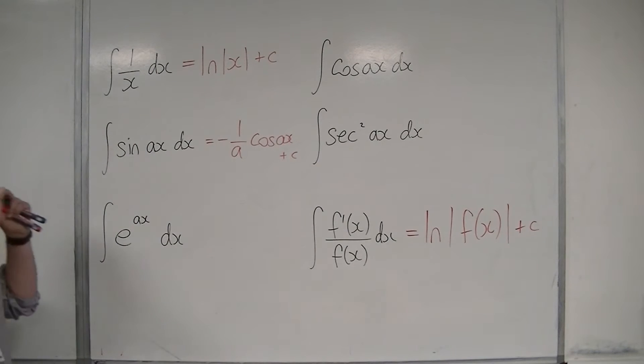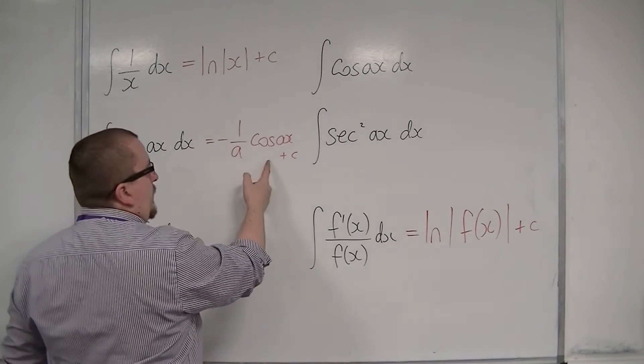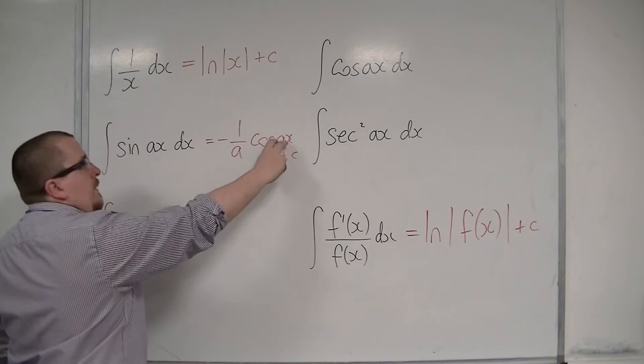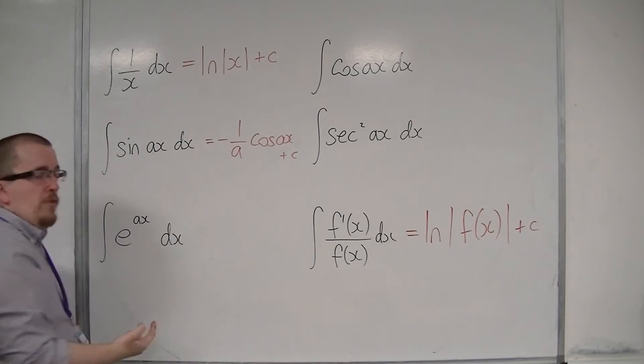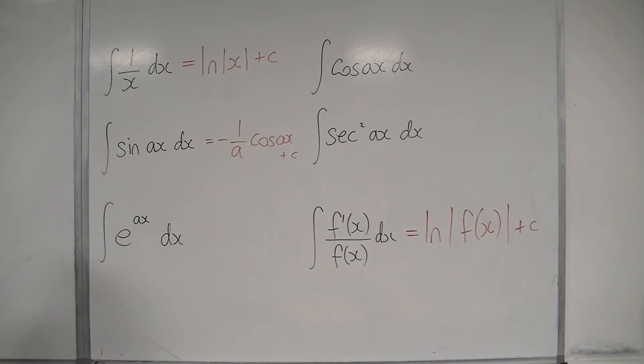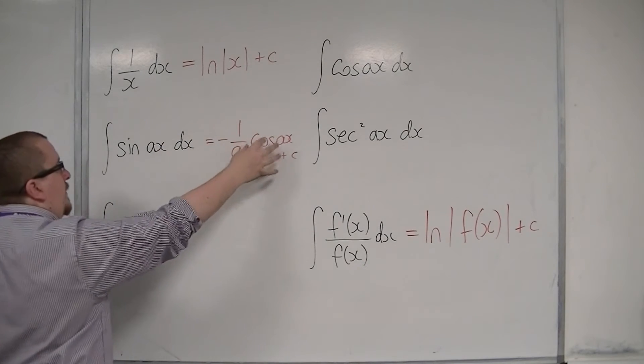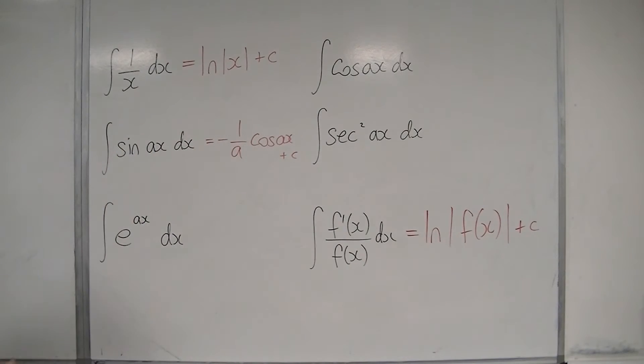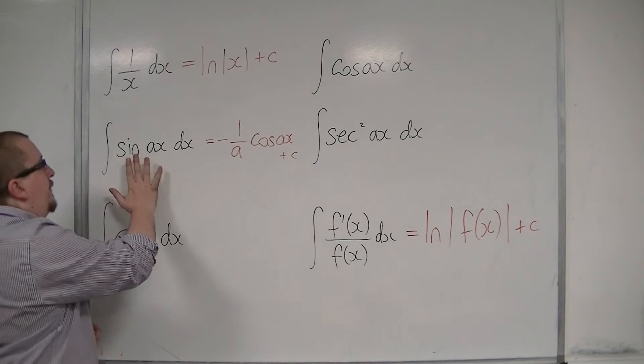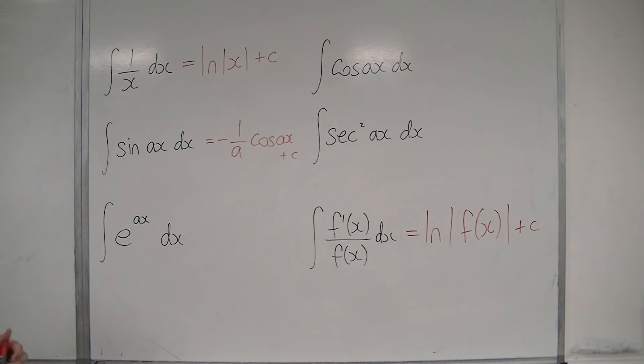Now, the reason why you've got this 1/a is because if you were to differentiate this, the derivative of ax would have to come to the front, and then it would have to cancel out this 1/a. So in order to go from there to there, to differentiate this to get back to that, you must have something that's going to cancel out that a coming out of there using the chain rule. So this sin(ax) integrates to -1/a cos(ax) + c.